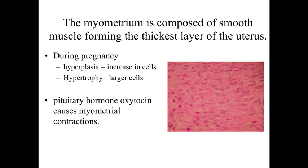The myometrium is going to be the middle layer, the thickest layer, composed of smooth muscle cells. It doesn't change a lot during the uterine cycles, but during pregnancy it's going to undergo both hyperplasia — an increase in the number of cells — and hypertrophy, where these cells become larger. This results in an enlargement and thickening of the uterine wall during pregnancy, to allow for childbirth and to expel the infant. During childbirth, the pituitary hormone oxytocin causes myometrial contractions and synchronizes them, so all the smooth muscle cells are contracting forcefully in unison to produce the strong contractions involved with childbirth.